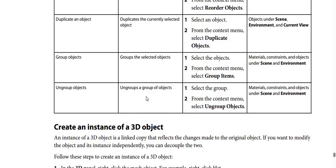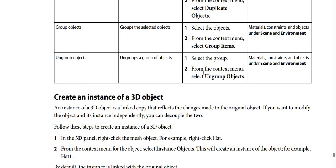For the duplicate an object interaction, the description is: duplicate the currently selected object. To perform it, select an object, then from the context menu select Duplicate Objects. Not available for objects under scene environment and current view. Group objects and ungroup objects follow the same process as the previous interactions.